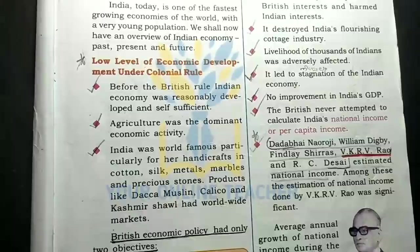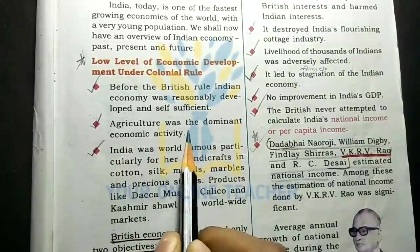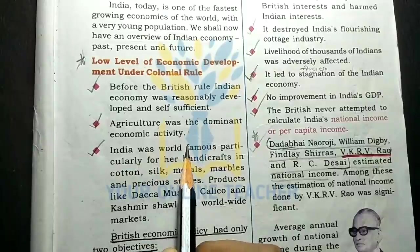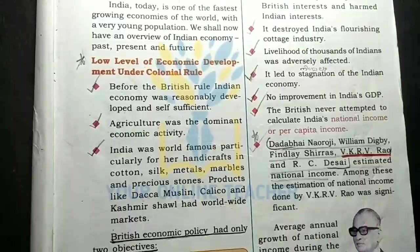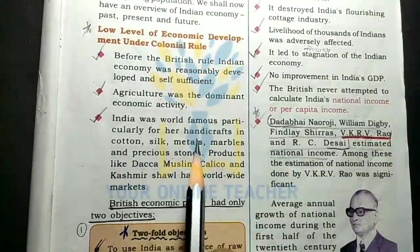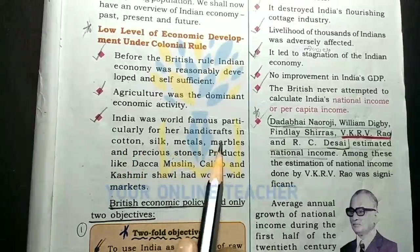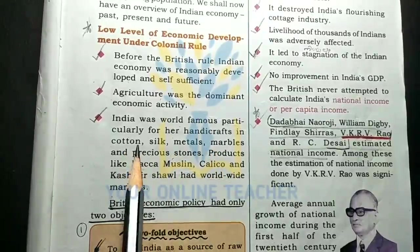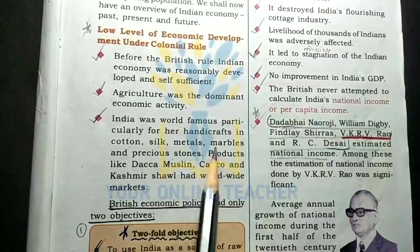Agriculture was the dominant economic activity — Krishi was the main economic activity. India was world famous particularly for her handicrafts in cotton, silk, metals, marbles, and precious stones.